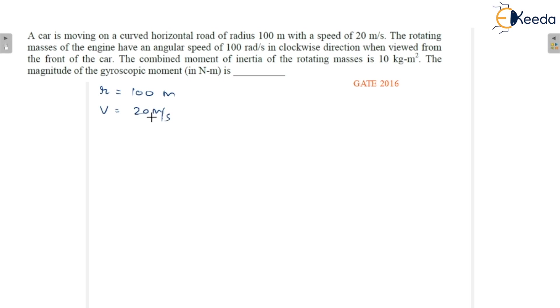The rotating mass of the engine has an angular speed ω equal to 100 radians per second in clockwise direction when viewed from the front of the car.